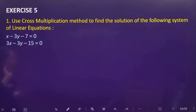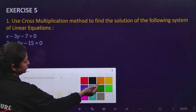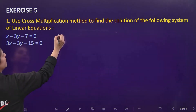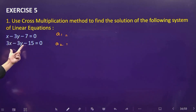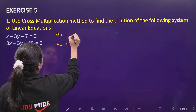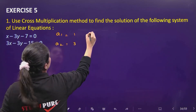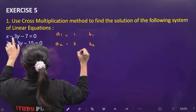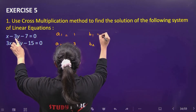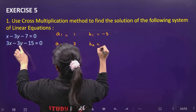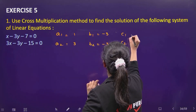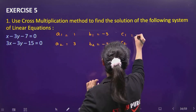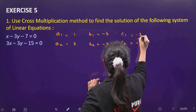We define a1, a2, b1, b2, c1, c2. Here a1 is the coefficient of x in the first equation, and a2 is the coefficient of x in the second linear equation. b1 is the coefficient of y in the first linear equation, which is minus 3, and b2 is the coefficient of y in the second linear equation, also minus 3. c1 is minus 7 and c2 is minus 15.